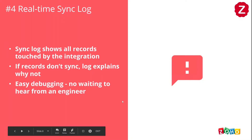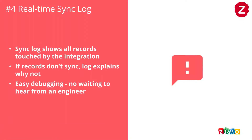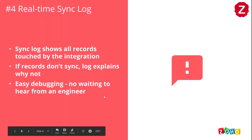We have a sync log, which we'll show you. It explains why errors occur and makes for easy debugging. If there's an error in Zoho — for example, a data error with one of the records, maybe a weird special character — we actually give you the URL of the record in Zoho that is causing the issue. You can just click the link and fix the issue, and the system will re-sync.